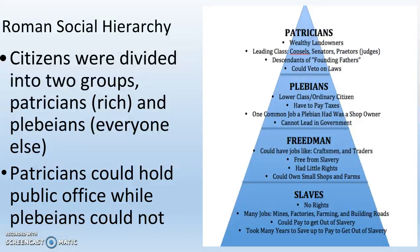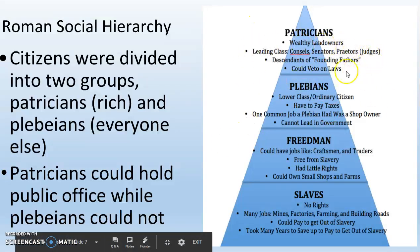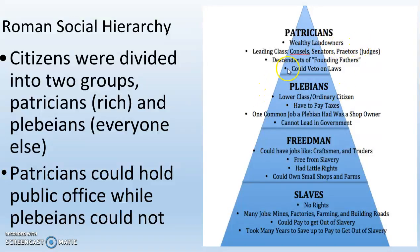Citizens are divided into two groups: patricians, that's the rich, and plebeians, that's everyone else. Looking at our pyramid, the patricians are at the very top — these are our wealthy landowners. They've got all the best jobs; they can be consul, they can be senator. Generally they are the descendants of the founding fathers of Rome, and these patricians can veto laws. Below them we have the plebeians — the normal people, but they are citizens. They do have to pay taxes and cannot lead in government, but they own small businesses. The patricians have more political power than the plebeians.